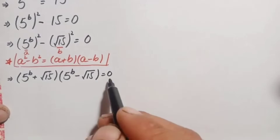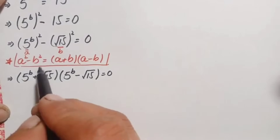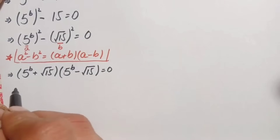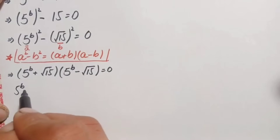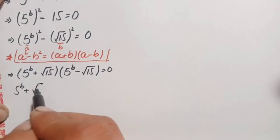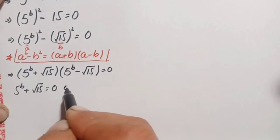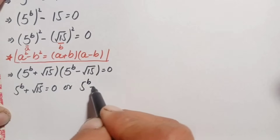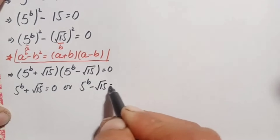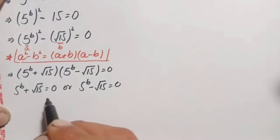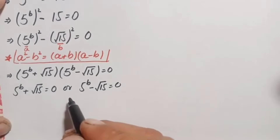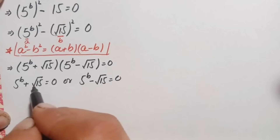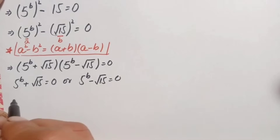Applying this identity, we get: 5 raised to power b plus square root of 15, times 5 raised to power b minus square root of 15, equals zero. Since the product of these two expressions is zero, either the first expression is zero or the second expression is zero. This gives us two equations to solve for b.